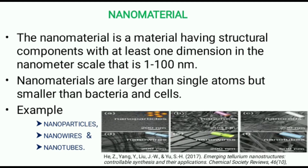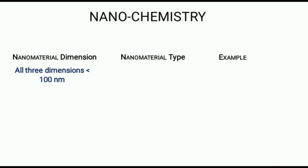A nanomaterial is a material having structural components with at least one dimension in the nanometer scale, that is 1 to 100 nanometers. Nanomaterials are larger than a single atom but smaller than a bacterial cell. Examples include nanoparticles, nanowires, and nanotubes, and AFM images of these nanomaterials are shown in the figure.